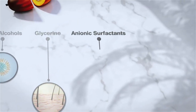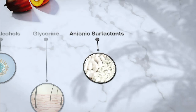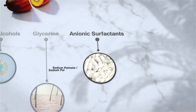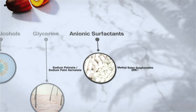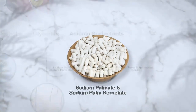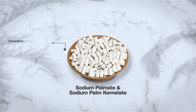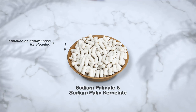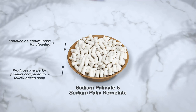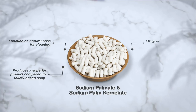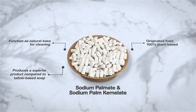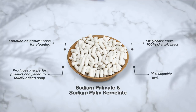Anionic surfactants are cleansing agents that can act as a green alternative in many products. Examples of anionic surfactants are sodium palmate, sodium palm kernelate and methyl ester sulfonates, MES. Sodium palmate and sodium palm kernelate are available in noodle form and function as a natural base for cleaning. When distilled fatty acids go through neutralization, it produces a superior product compared to tallow-based soap, since the fatty acids originated from a 100% plant-based source.